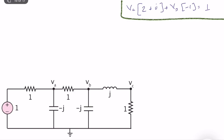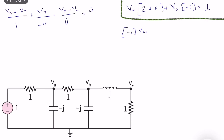For node B: VB minus VA divided by 1, plus VB divided by minus j, plus VB minus VC divided by j, is equal to 0. The coefficient of VA is minus 1. For VB, the j terms cancel each other out, giving a coefficient of 1. The coefficient of VC is minus 1 over j, which equals j. So the node B equation gives: minus 1 times VA, plus 1 times VB, plus j times VC equals 0.